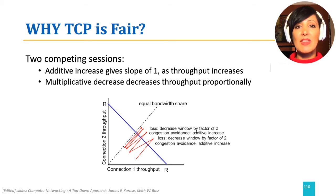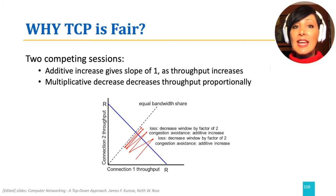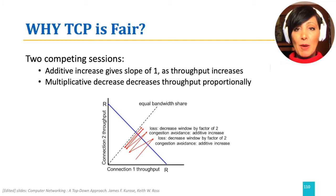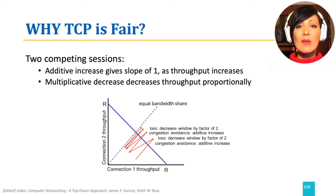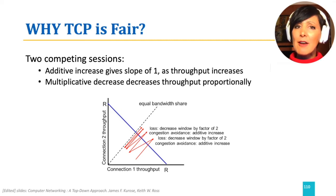They will compete when they sense availability and get penalized when they increase window size too much. This will result in flipping around a certain point in reaching a throughput, which would be half of the link capacity, as shown in the figure.